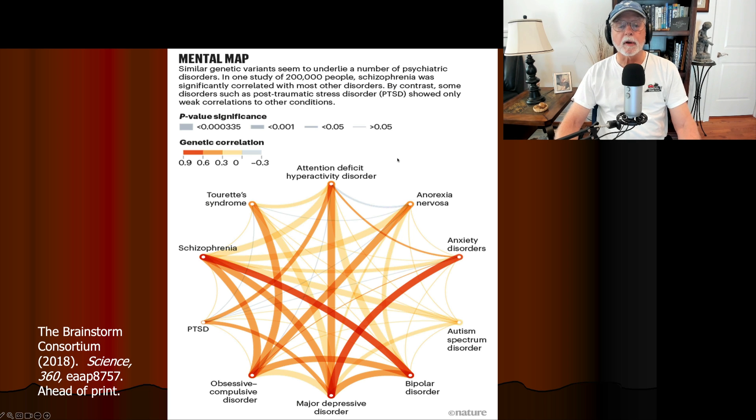Let me point out one other thing here, by the way. Notice the line between ADHD and anorexia is a negative color. It's a thin line, so it's not very strong, but it's negative, meaning that the genetics for one actually are protective of getting the other disorder. You're less likely than other people to get the other disorder. That makes sense.